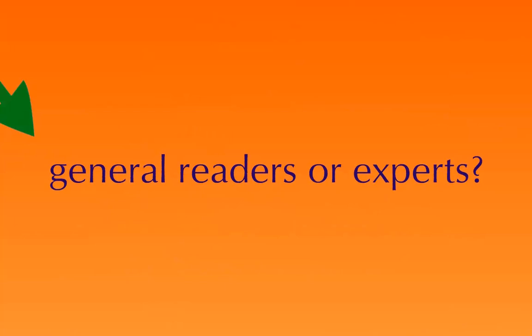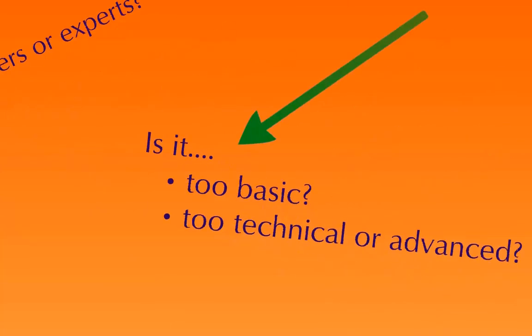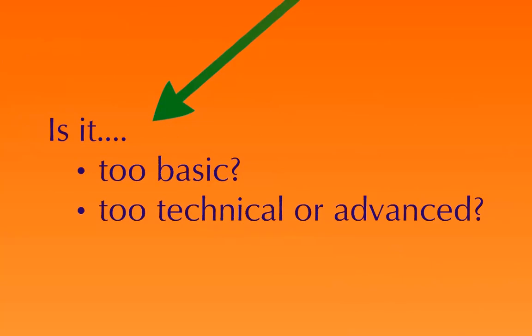When you figure out the target audience — is it general readers or experts — you can look at the language and how something is written. Is it too basic, or is it too technical or advanced for what you're looking for? If you're doing an intro class and reading something geared for scientists who already understand all the jargon and lingo, that might be too advanced. Or if it's too basic — a children's book on a topic may be accurate and factual, but it would be inappropriate for a college-level paper. Is it appropriate for your use?